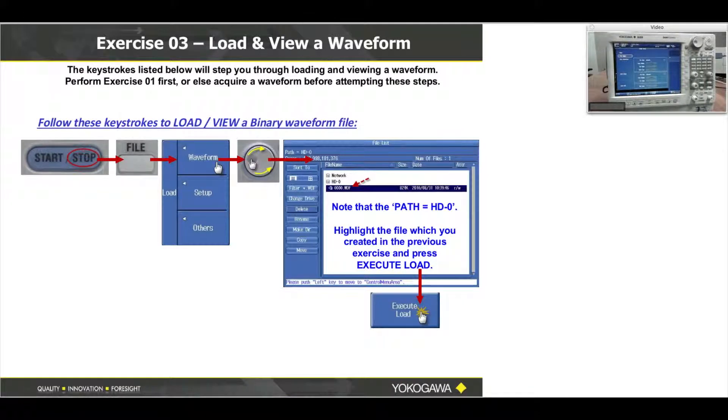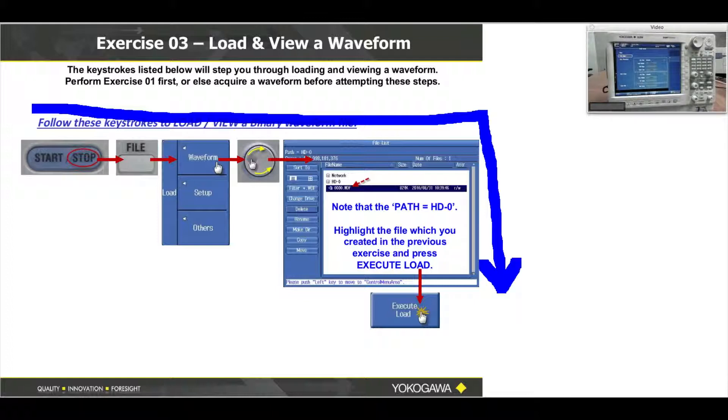So if you have a file on your USB thumb drive, the extension—the last three letters—will be dot WDF (whiskey delta foxtrot), and in about six keystrokes you can select and reload that file back to the screen. Once it reloads to the screen, you can now do cursor measurements, parametric measurements, things like that all over again.